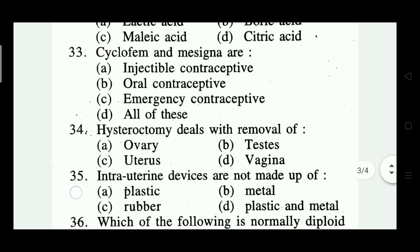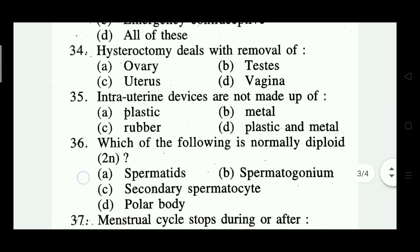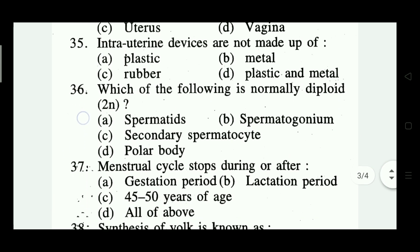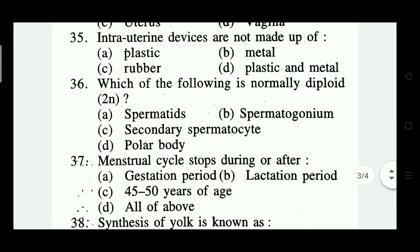Question number thirty-five: intrauterine devices are not made up of — plastic, metal, rubber, plastic and metal. The right answer is option C — rubber.